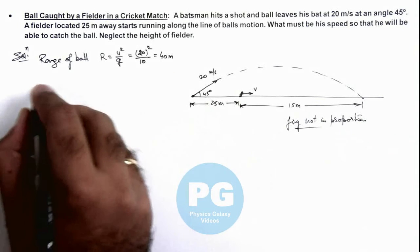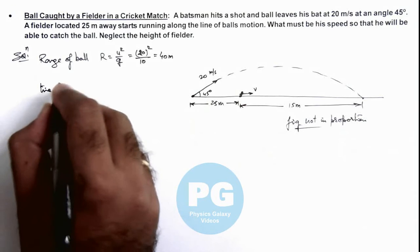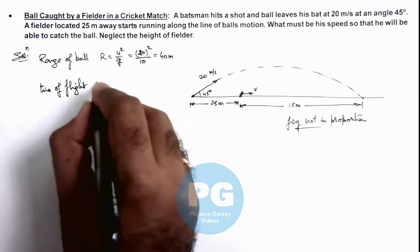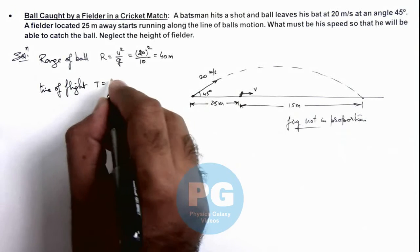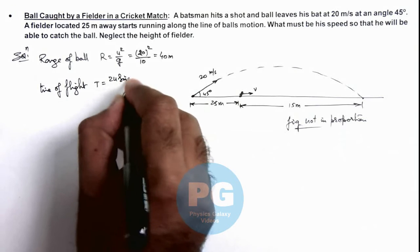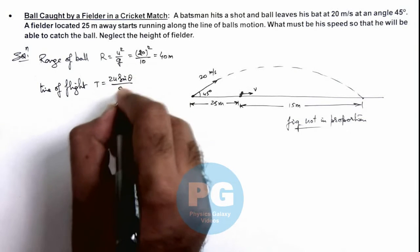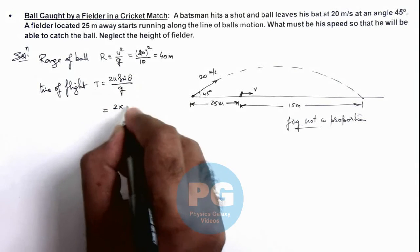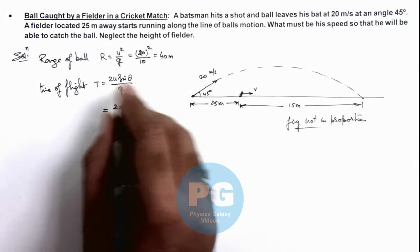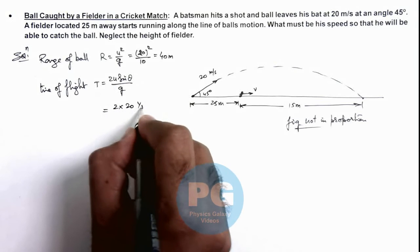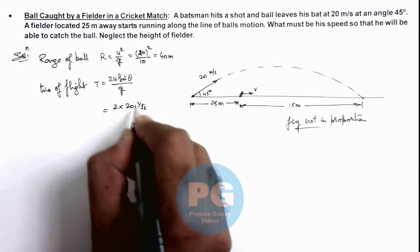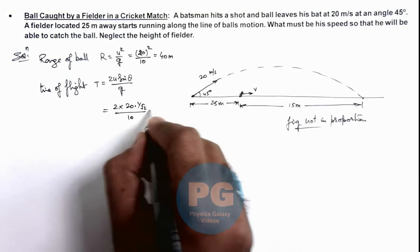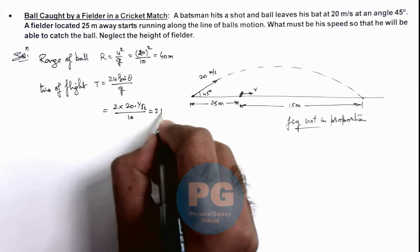We can also calculate the time of flight of the ball, which is given as 2u sinθ divided by g. The value will be 2 times 20 times sine 45, which is 1 divided by root 2, all divided by g. So this can be written as 2 root 2 seconds.